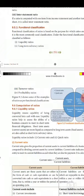What assets are convertible within a year? What payments are due within a year? The relationship between these two items gives us liquidity ratios. Liquidity ratios help to assess the ability of a business to meet its short-term financial obligations.